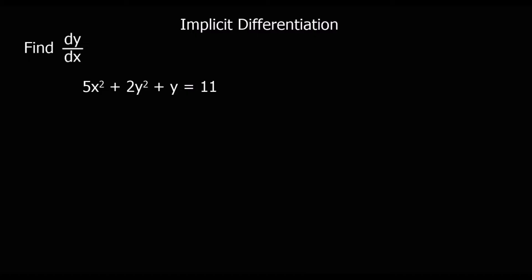Whenever we have an implicit function, it means the x's and y's are all mixed together — it's not in the form y equals f of x. We can still differentiate implicit functions with respect to x, and we do that by applying the chain rule.